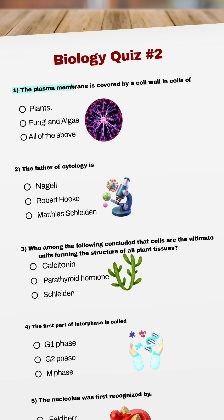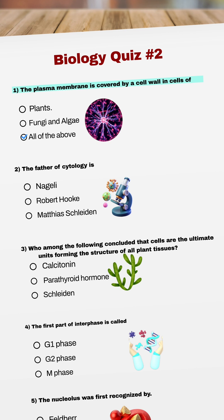Question 1. The plasma membrane is covered by a cell wall in cells of all of the above.